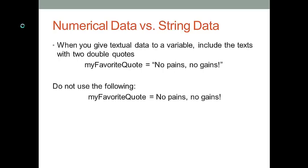What about textual data? What should we pay attention to if we want to give textual values to a variable? In Python, we call all texts, such as letters, words, or a combination of words, strings. So in the future, if I mention string type of data, I actually refer to texts.